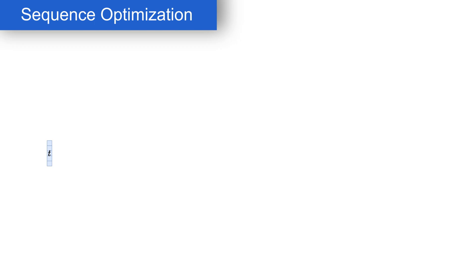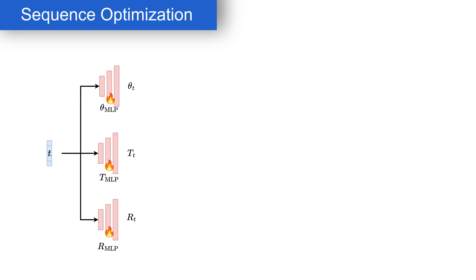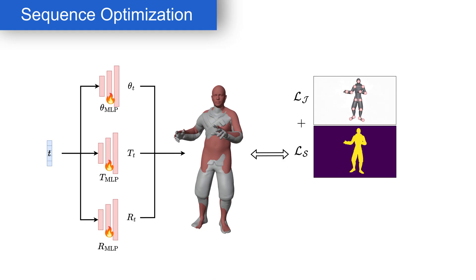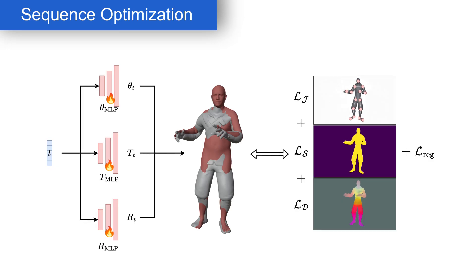Finally, to transfer the motion from a synthesized video to the mesh, we optimize for the per-frame pose, translation, and rotation. We use a neural representation for these parameters to take advantage of the inductive bias of MLPs, which produces smoother motions. These MLPs take as input the frame index and positional encoding, and output the corresponding SMPL parameters. We use the extracted body landmarks, silhouette, mask, and dense features, and also enforce temporal smoothness for more realistic results.